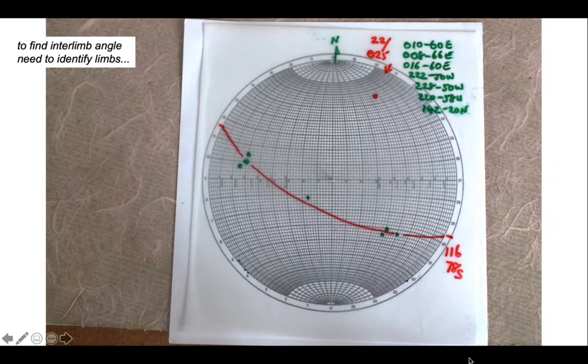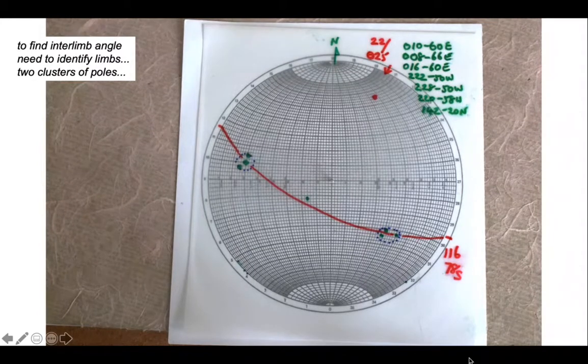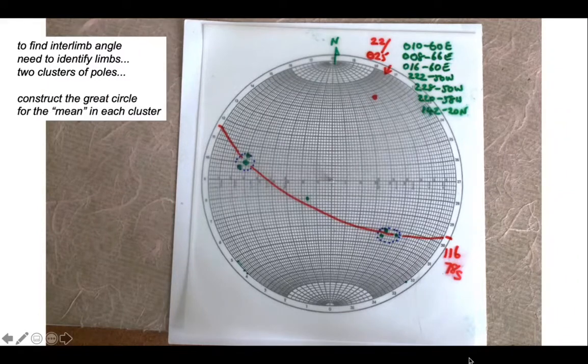When we look at our data set, that's what we see here. There are two clusters of poles which presumably represent two distinct limbs. What we can do now is estimate a mean orientation for each of these two clusters. This mean orientation will be a mean pole for the limb, and then we can plot these up as great circles.